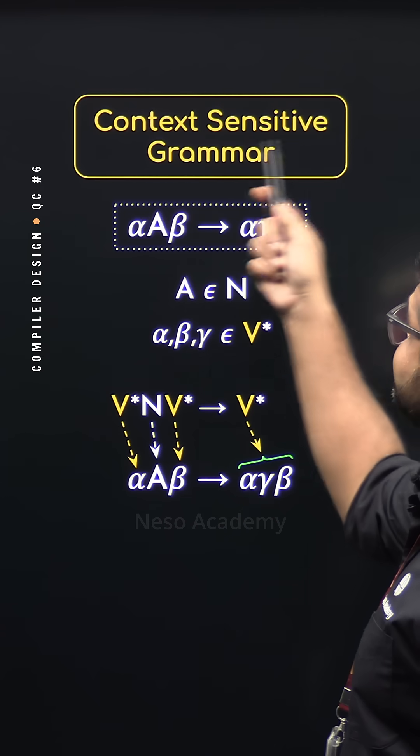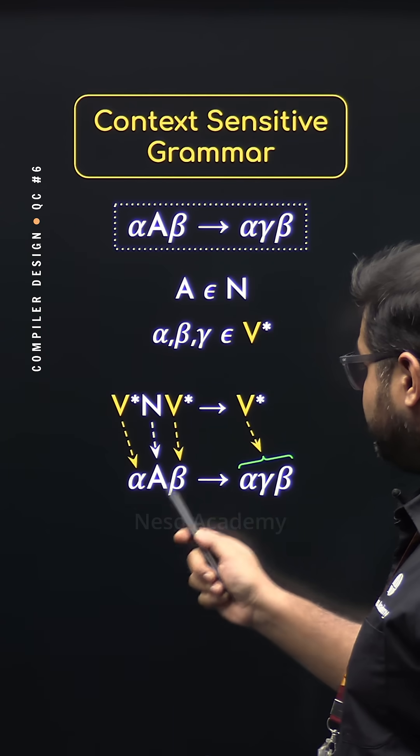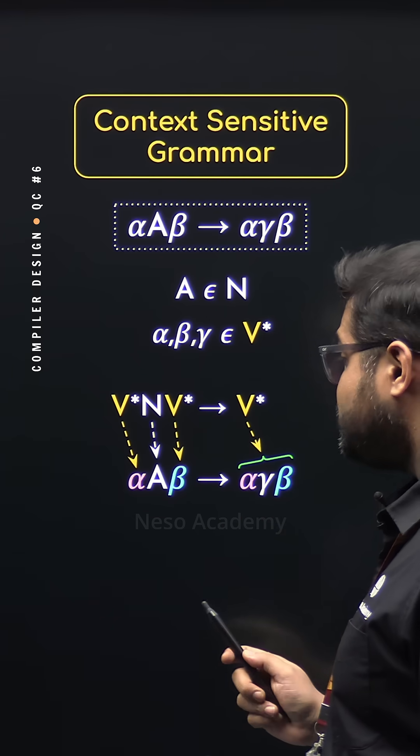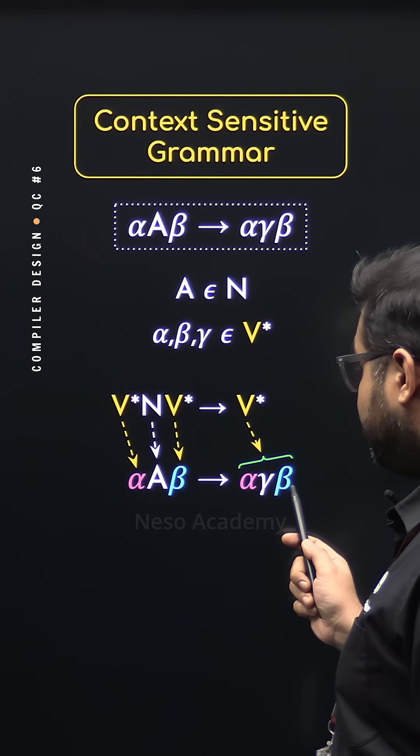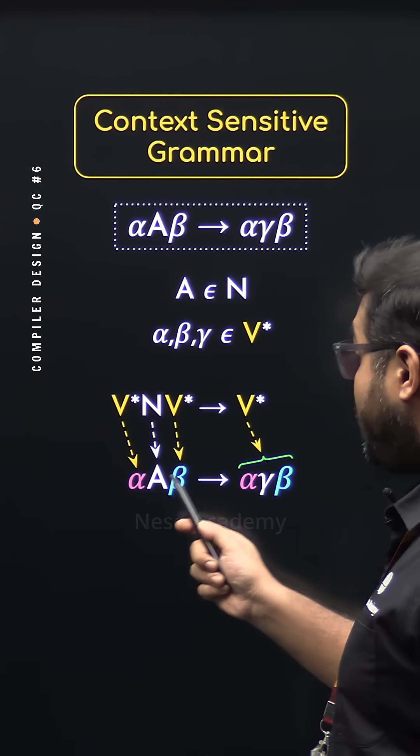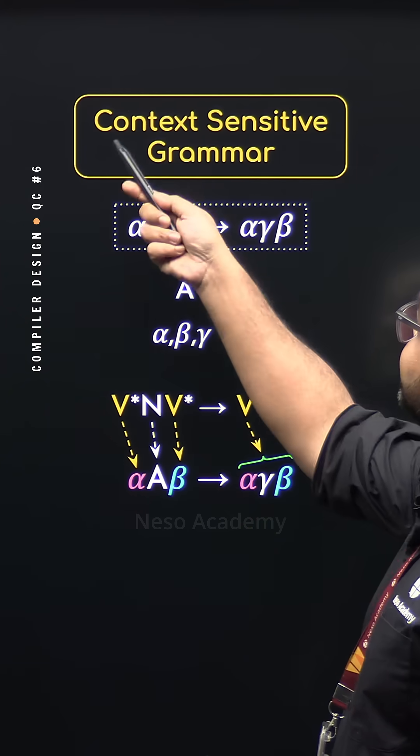Then why it is called context-sensitive grammar? Focus here. A here is producing gamma in association with the left-context alpha and the right-context beta. Without the presence of these two, it won't be able to produce gamma. So it is context-sensitive.